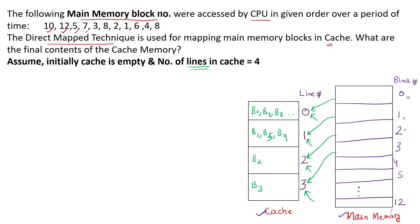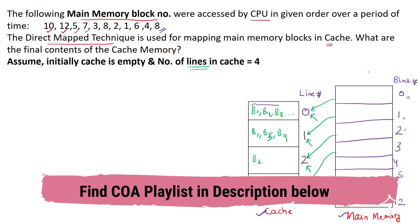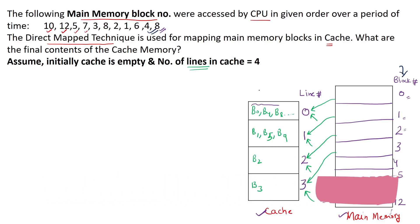Cache line number 0 can contain block 0, block 4, block 8, and so on. Line number 1 can contain block 1, block 5, block 9. However, these blocks will not be present at the same time — at any particular point in time, only one of them (either B0, B4, or B8) can be in that cache line. The same rule applies to all other cache lines.